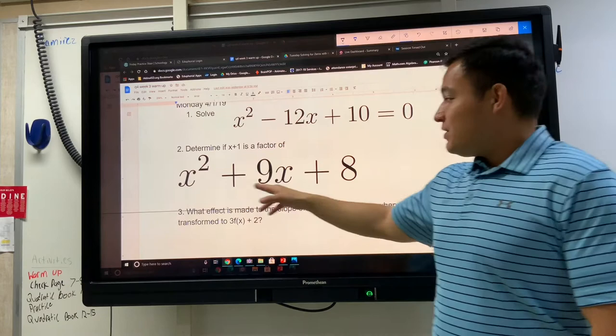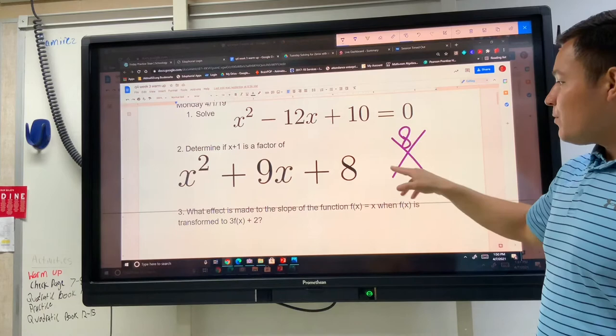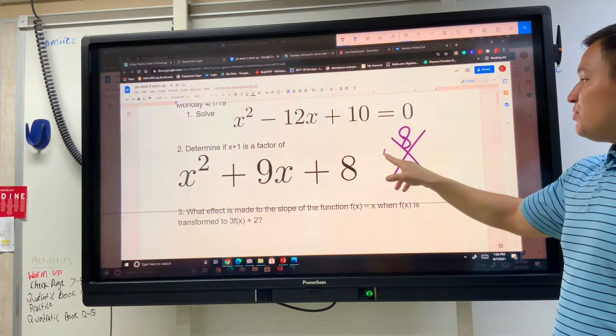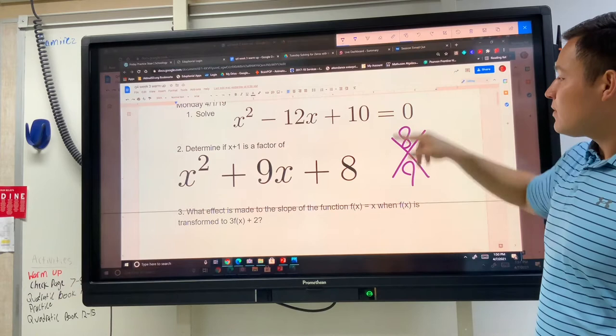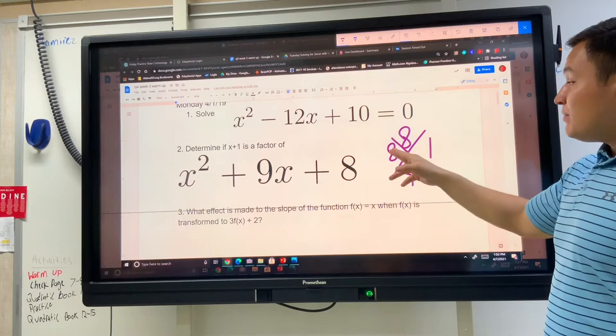For example, this one down here, x squared plus 9x plus 8, if we use our X method, we're going to have an 8 on top, 9 on the bottom. And things that multiply to make 8 could be 4 and 2, but 4 plus 2 doesn't make 9, so let's pick something else. Let's pick 8 and 1. 8 times 1 makes 8, and 8 plus 1 makes 9, so 8 and 1 are some good factors we could use.